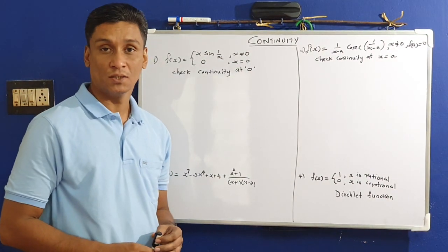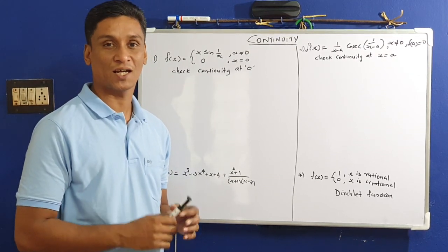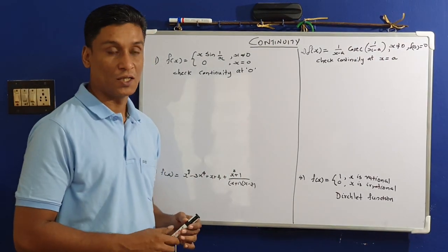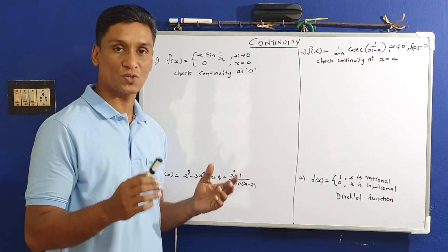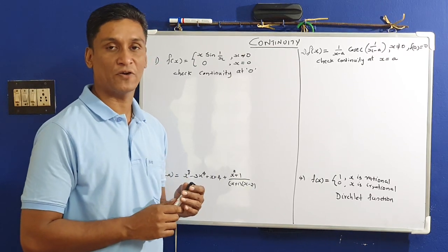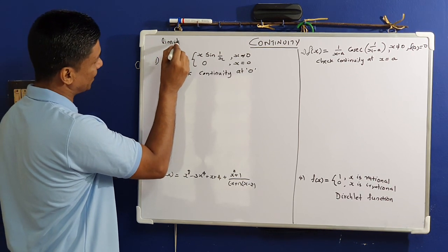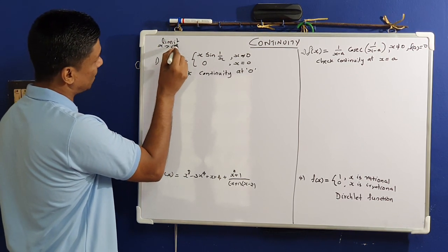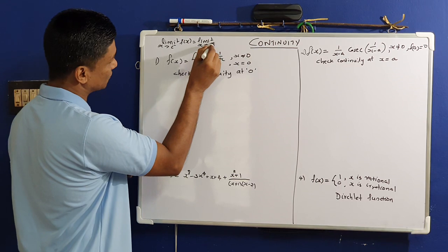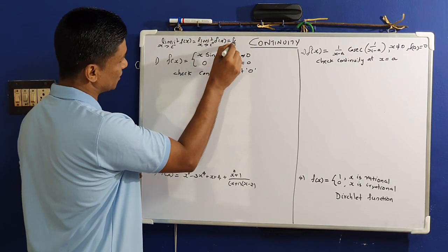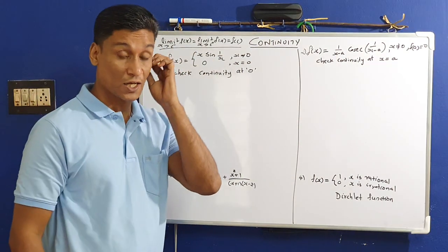Good morning students. In today's class, we are going to talk about continuity problems. We are going to talk about continuity at an interior point C. The definition is: the limit as x tends to c⁻ of f(x) equals the limit as x tends to c⁺ of f(x), equals f(c). This is the definition of continuity of a function f(x) at an interior point C.